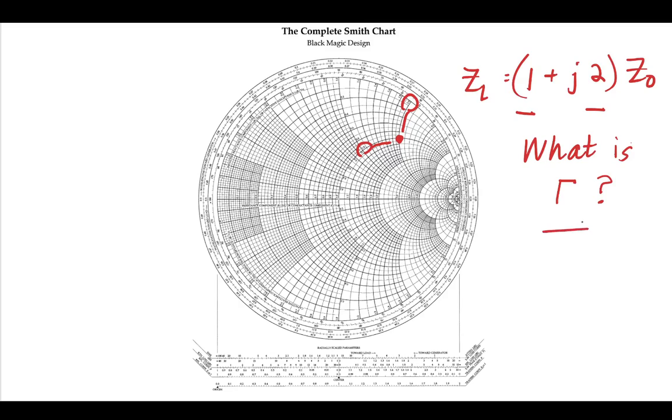Now our question is, what is the reflection coefficient? And recall, this is often going to be given in the polar form. This is one of the reasons why the Smith chart is so powerful for us - it helps us to convert quickly between rectangular and polar format, even without a calculator.